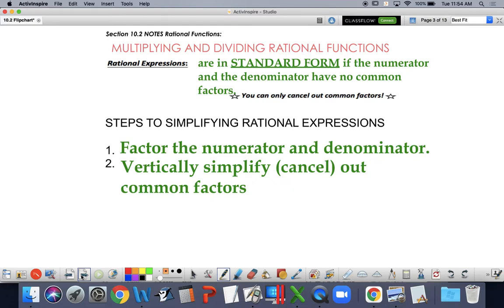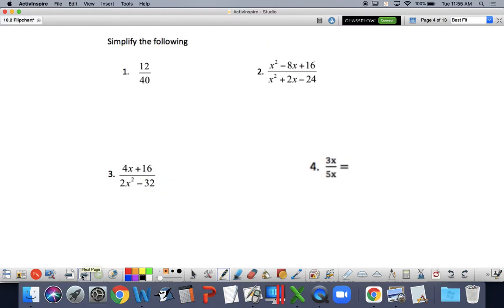Number one, everybody look at number one. Simplify that fraction. Do not use your calculator. Do it in your head. Figure out what is the common factor for both your numerator and your denominator. What divides into both 12 and 40? 4. So, I'm going to divide both of those by 4, and I get 3 tenths. Or, you have 4 times 3 divided by 4 times 10. I cancel those fours out. That is all we're going to be doing, just with rational expressions.